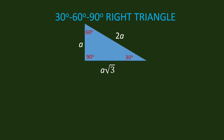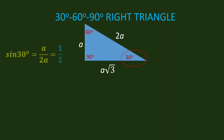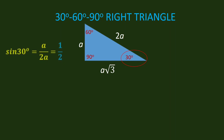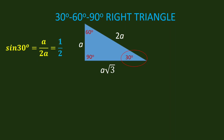Using the same special right triangle, we can find the 6 trigonometric ratios. Let us start with an angle of 30 degrees. Sine 30 degrees is opposite over hypotenuse — that is, A over 2A. We cancel A, and the final answer is 1 over 2.